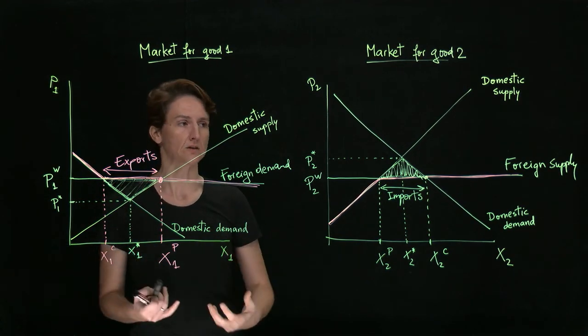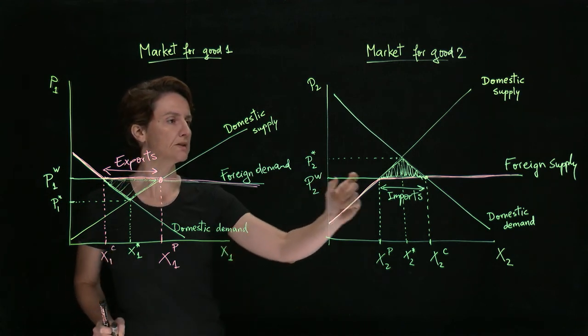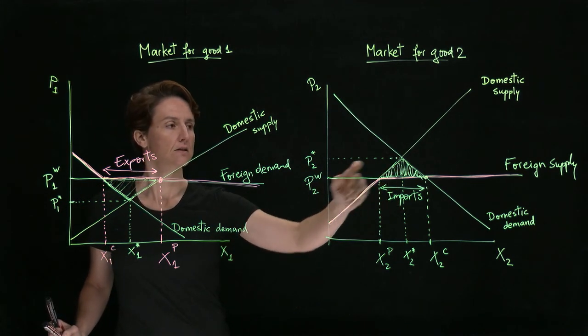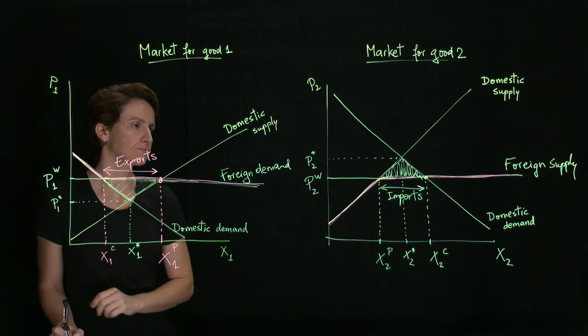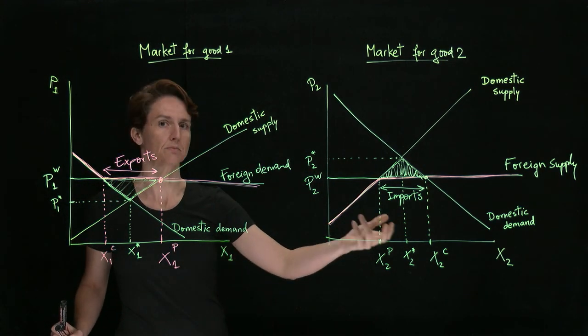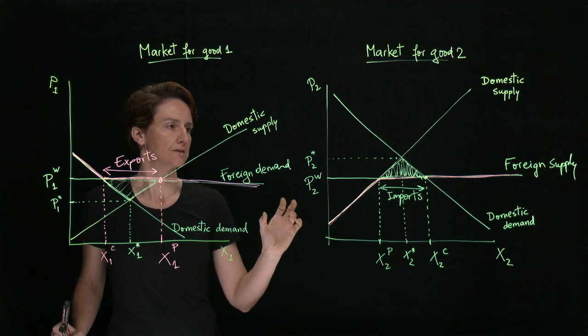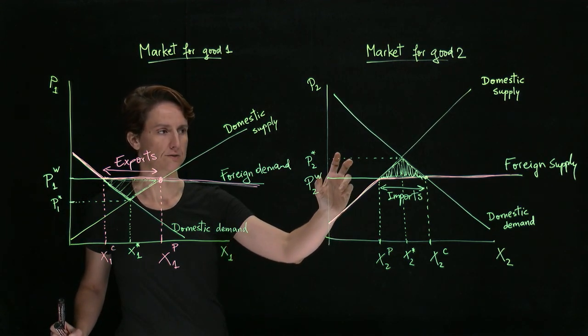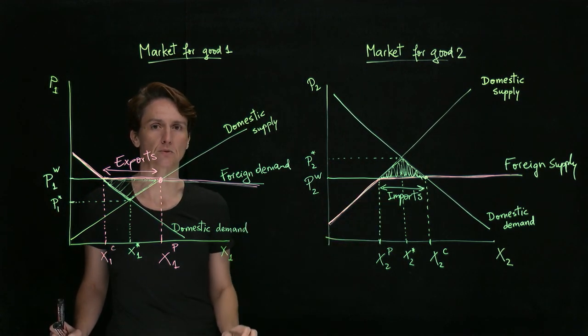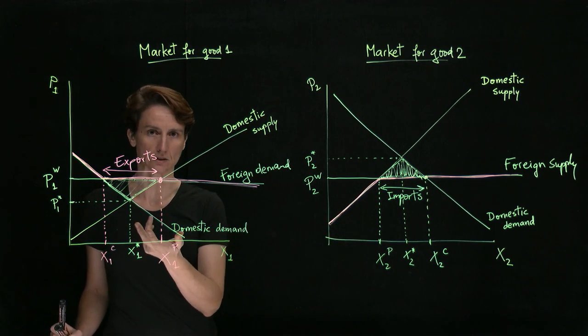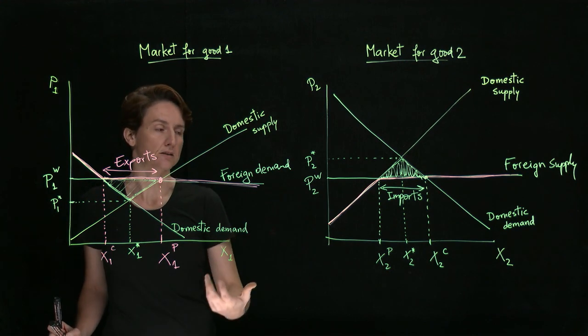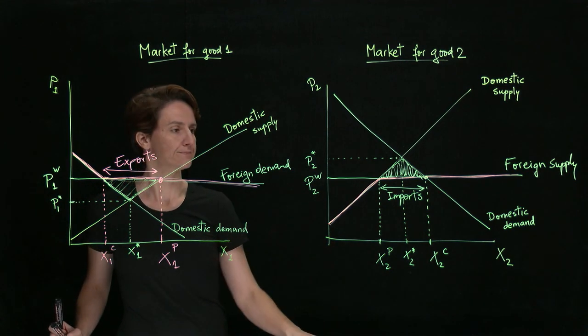So at least theoretically, it should be possible to redistribute that net gain so that part of it goes to the side that lost. In which case, everyone could be better off. It's simply an issue of how you allocate the gains from trade, but in either case, whether the country ends up importing or exporting the good, we should expect it to be better off.